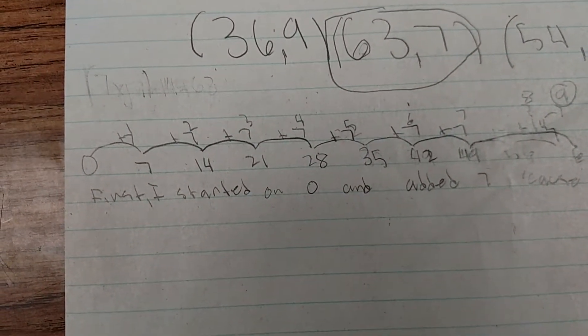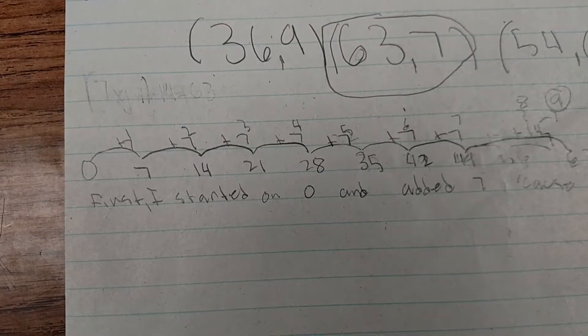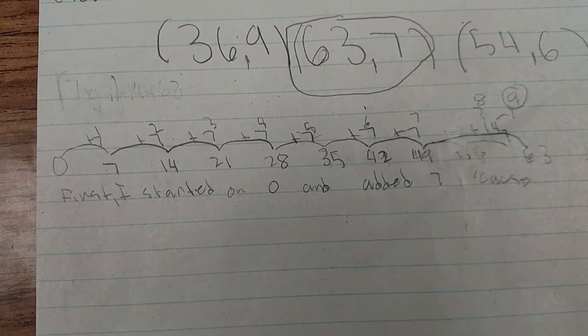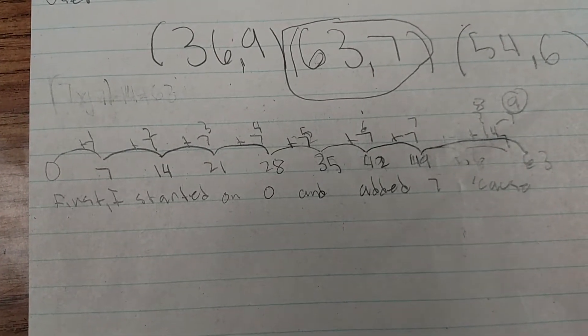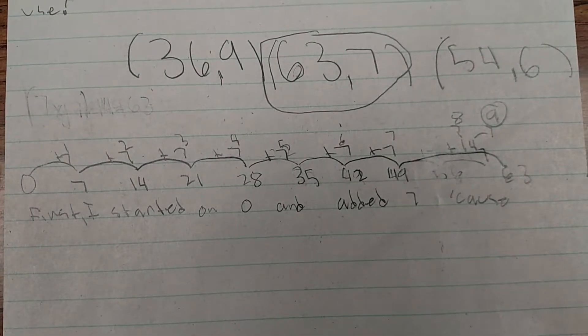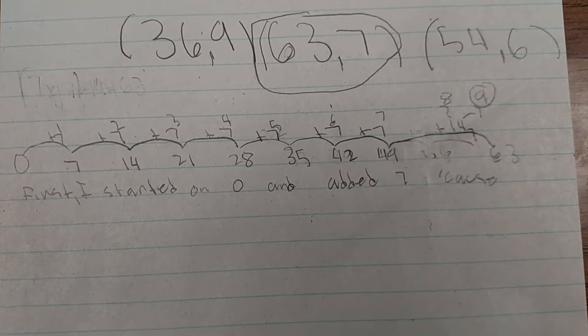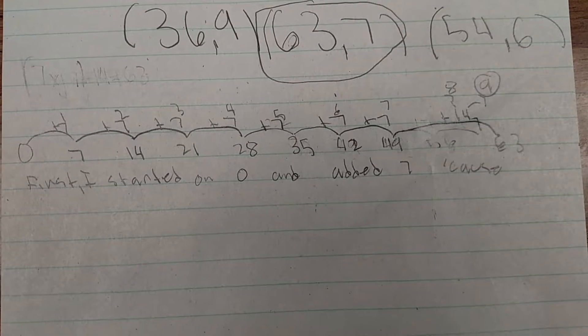So I added 7 to 0 and I got 7. And 7 plus 7 equals 14. And 14 plus 7 equals 21. 21 plus 7 equals 28. 28 plus 7 equals 35. 35 plus 7 equals 42.